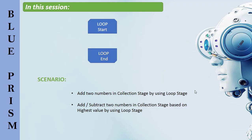The basic principle of Blue Prism is to automate repeated work, and as such a process will probably need to repeat some steps over and over again. So far we have only looked at simplistic linear paths, but now we have a circular path called Loop Stages for iterations.